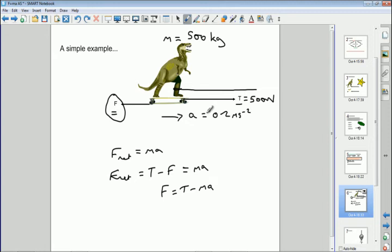And then it's just a matter of plugging in numbers. So the thrust force we know, which is 500 newtons, minus the mass, which is 500 kilograms, times the acceleration, which is 0.2 meters per second squared. 500 times 0.2 is 100. 500 minus 100 is 400 newtons. Okay, so the frictional force F is 400 newtons, retarding the acceleration of the dinosaur on the skateboard.